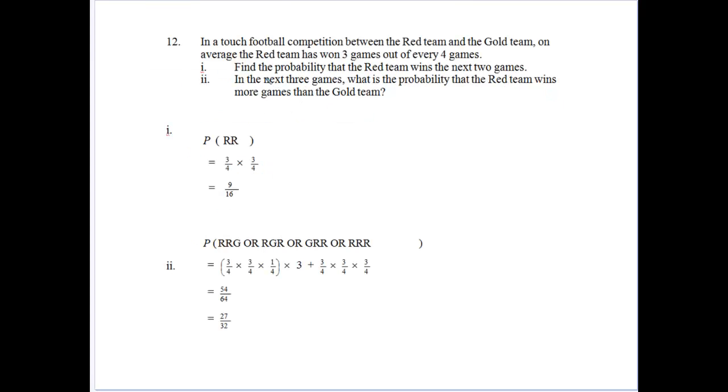And the last one here, we've got a touch football competition with red and gold. And on average red team wins three out of every four games. So find the probability that red wins the next two games. So they've got three quarters of a chance in this next game. And then three quarters of a chance again the game after. So nine in 16 chance they'll win both.